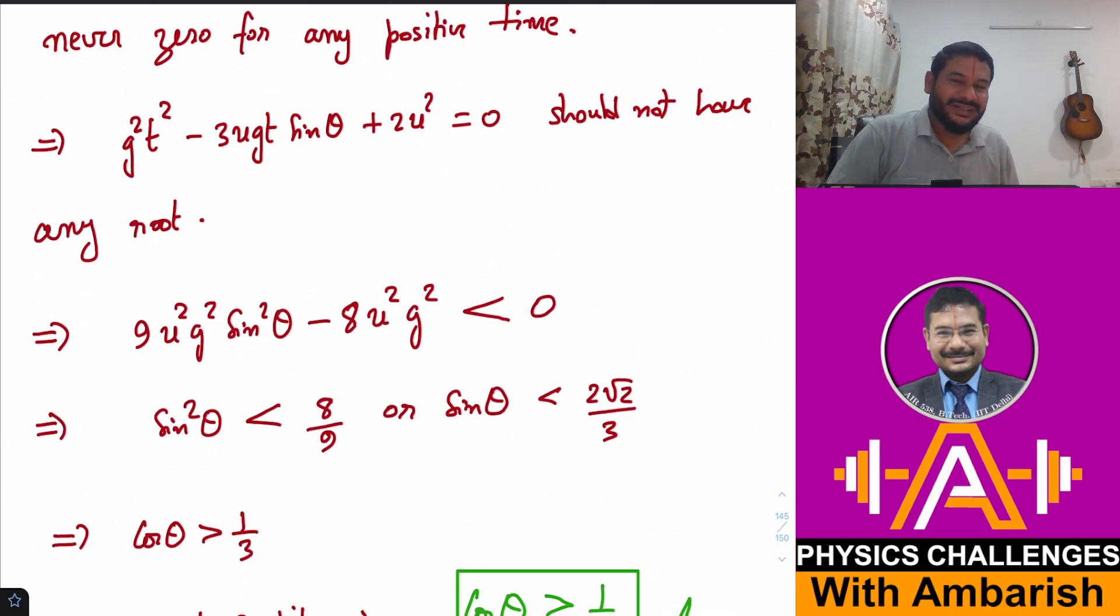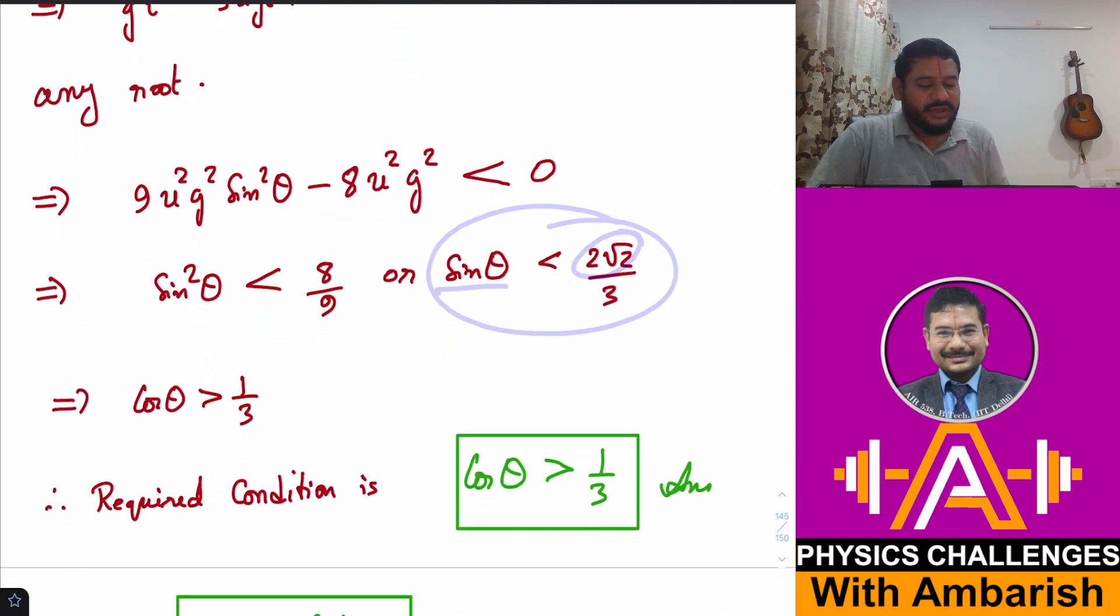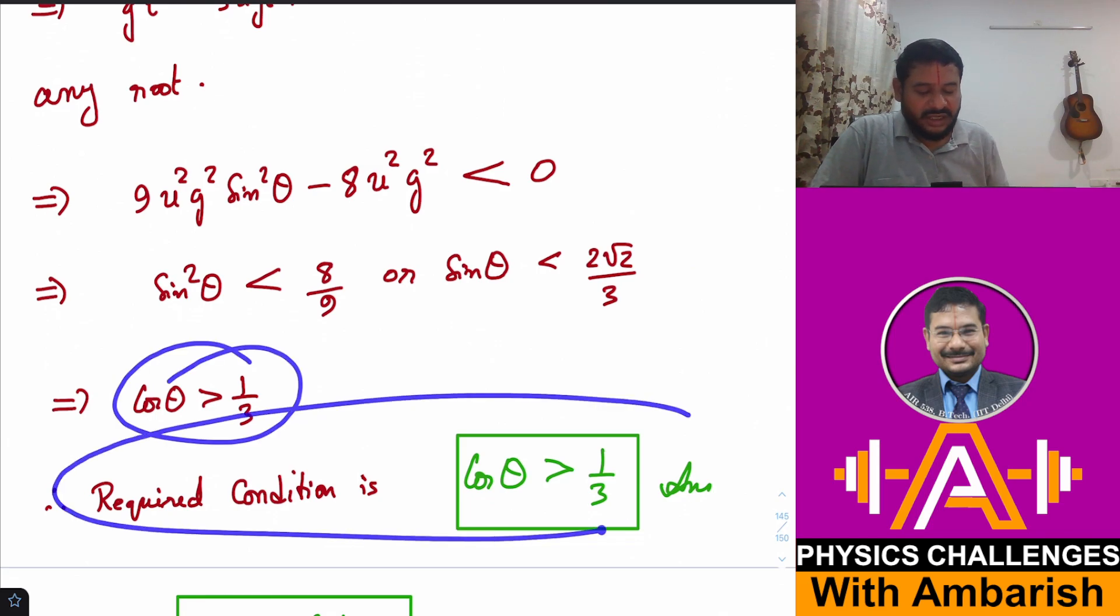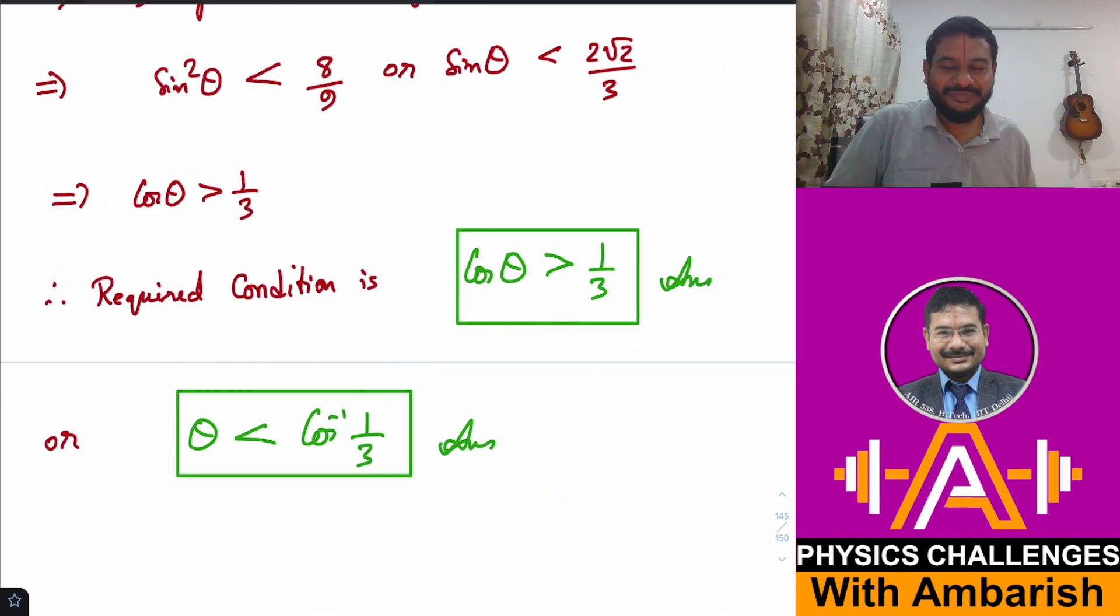The options were in terms of cos inverse, so I can easily convert it to cos inverse. If sin θ = 2√2/3, so perpendicular is 2√2 and hypotenuse is 3, that makes the base equal to √(9-8) = 1. Since sin θ < 2√2/3, then cos θ > 1/3. Cos θ is a decreasing function, so sin θ less than something means cos θ greater than something. Therefore θ < cos⁻¹(1/3), and that's our required answer.